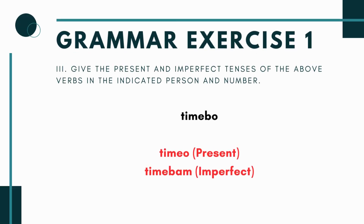Now we get to the last exercise. In exercise three it says: give the present and imperfect tense forms of the above verbs in the indicated person and number. So you go back to part two, take all the Latin verbs, and flip them to present and imperfect. This is actually a pretty good exercise to see how they all relate to each other and what they would look like across the three tenses.